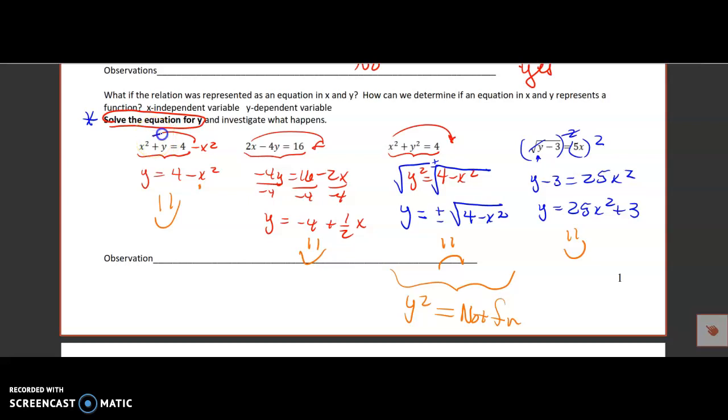So the first equation, we took the x squared on the other side, subtracted it, and ended up with an equation y equals 4 minus x squared. Second equation, we took the 2x on the other side, subtracted it, and then divided everything by negative 4, and we ended up with y equals negative 4 plus one half x.